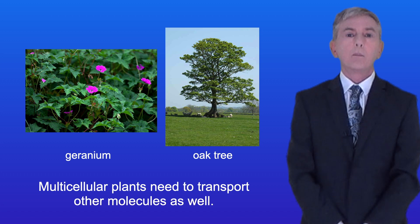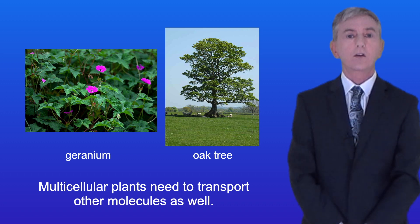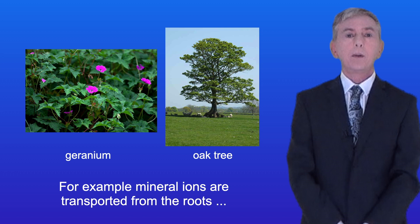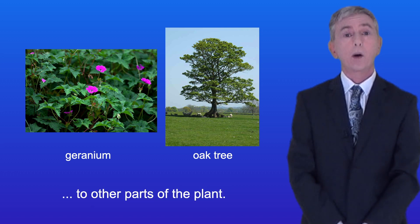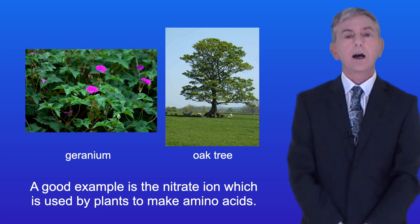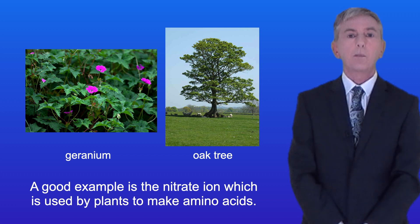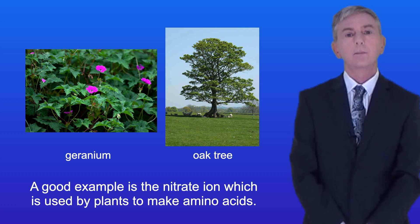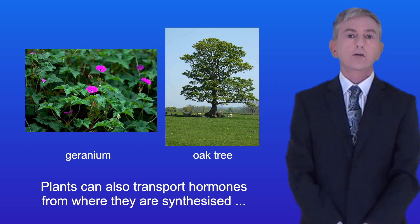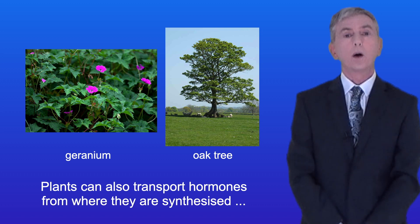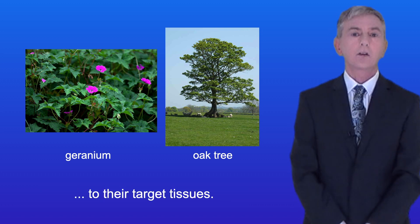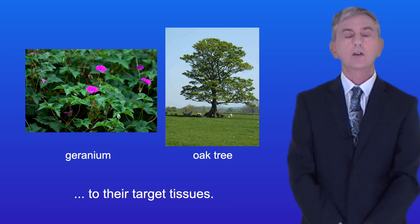Now multicellular plants need to transport other molecules as well. For example mineral ions are transported from the roots to other parts of the plant. A good example is the nitrate ion which is used by plants to make amino acids. Plants can also transport hormones from where they're synthesized to their target tissues.